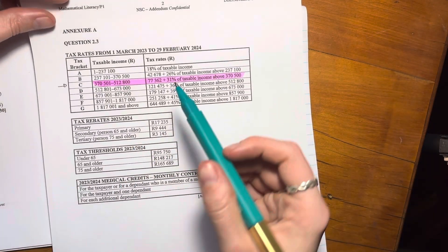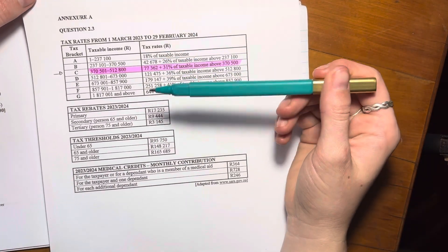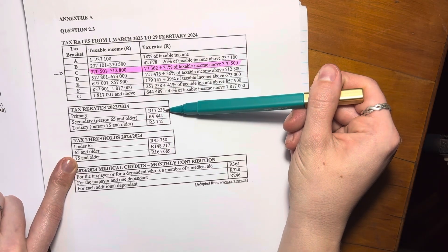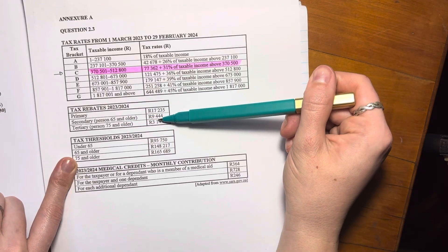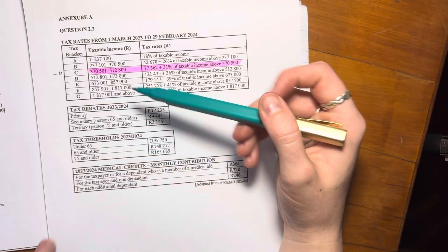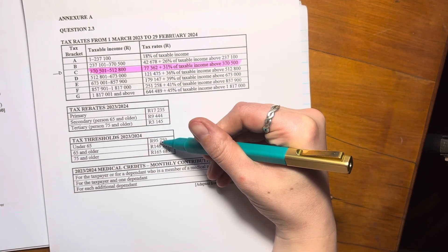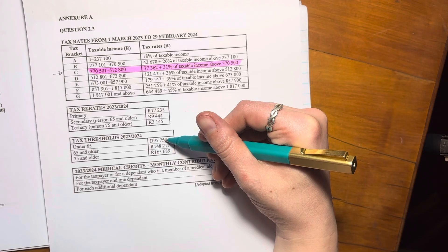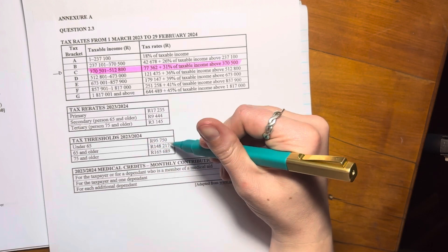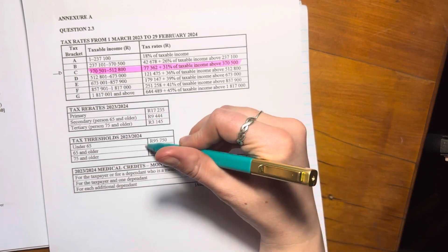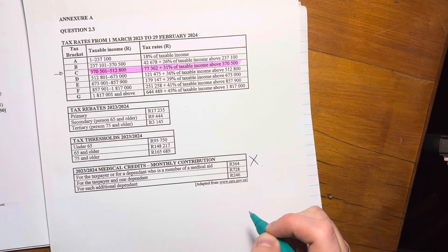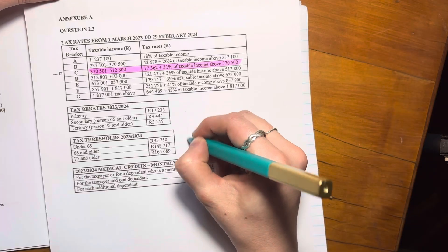Okay, well, we know that obviously there's other things that have to be taken into consideration. For example, tax rebates. Everyone gets this tax rebate. So I need to subtract that off. Then if she was above 65 or 75, she'd get additional ones. And then it says here tax threshold. So it's basically saying if someone earns less than 95,750, then they don't pay tax. Or that's the minimum amount they have to pay. So we're not going to actually look at that right now. And then here's the medical aid contributions. She doesn't pay medical aid. So we're not going to take that into consideration. So let's start here and then work our way down to make sure that we understand.